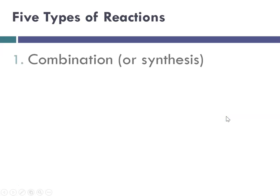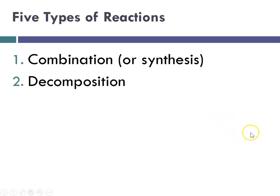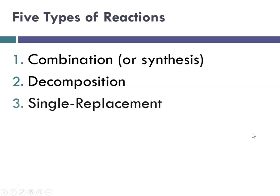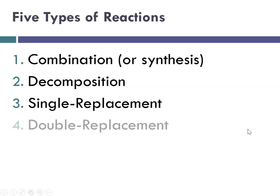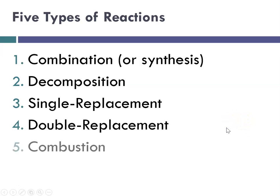There are five types of chemical reactions: combination, also called synthesis; decomposition; single replacement, sometimes called single displacement; double replacement, sometimes called double displacement; and combustion.